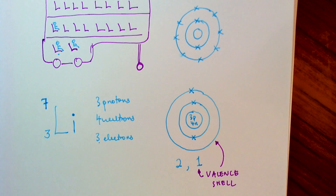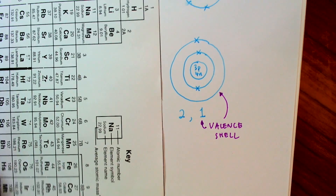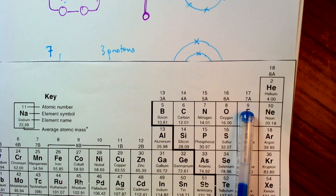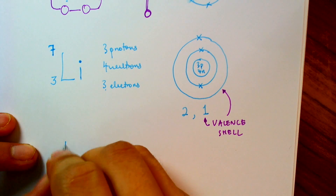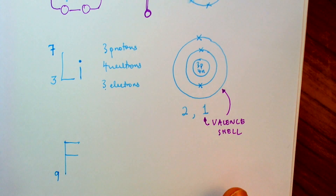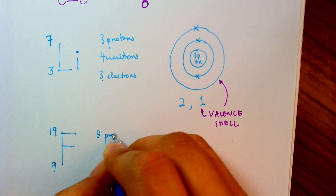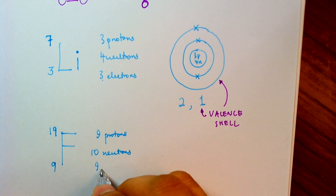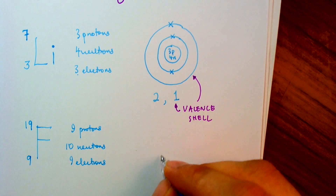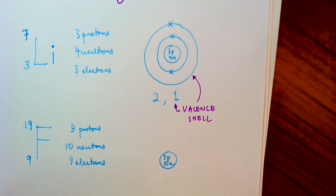Let's look at a larger atom — fluorine. Fluorine is element number 9, so it has 9 protons. It has mass number 19, so 19 minus 9 gives 10 neutrons. For a neutral atom, it has the same number of electrons — so 9 electrons. I have my nucleus with 9 protons and 10 neutrons, and 9 electrons to fill.